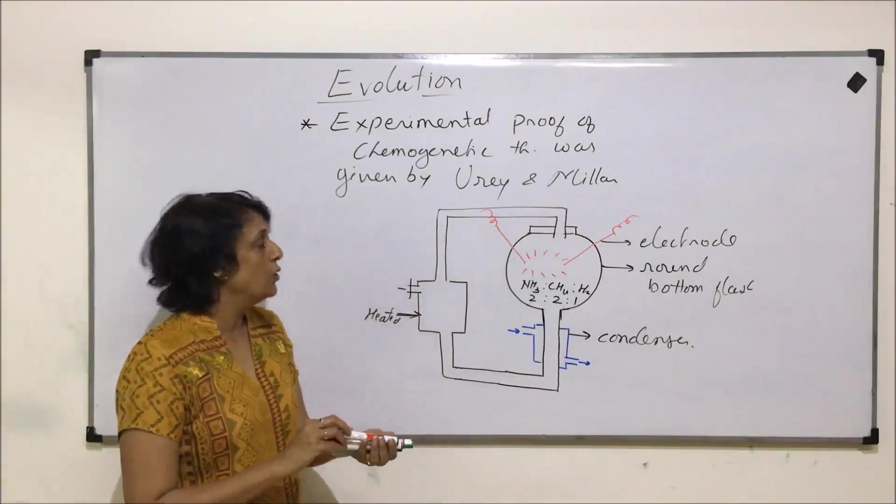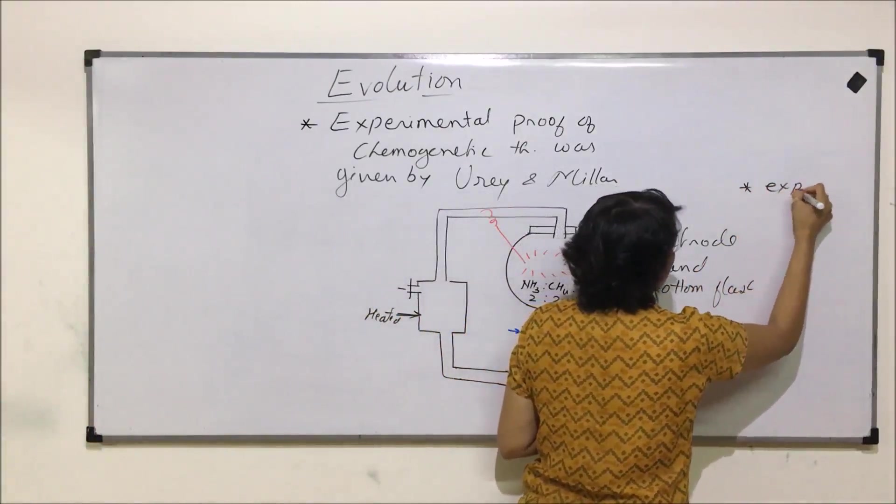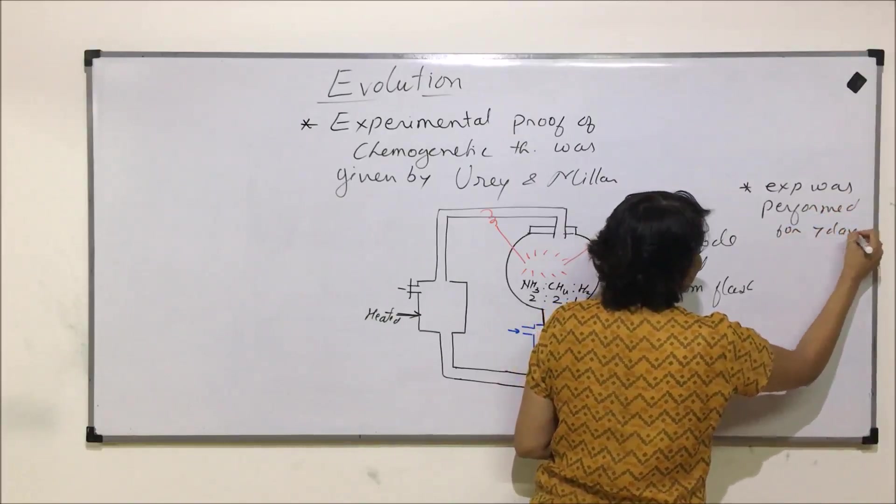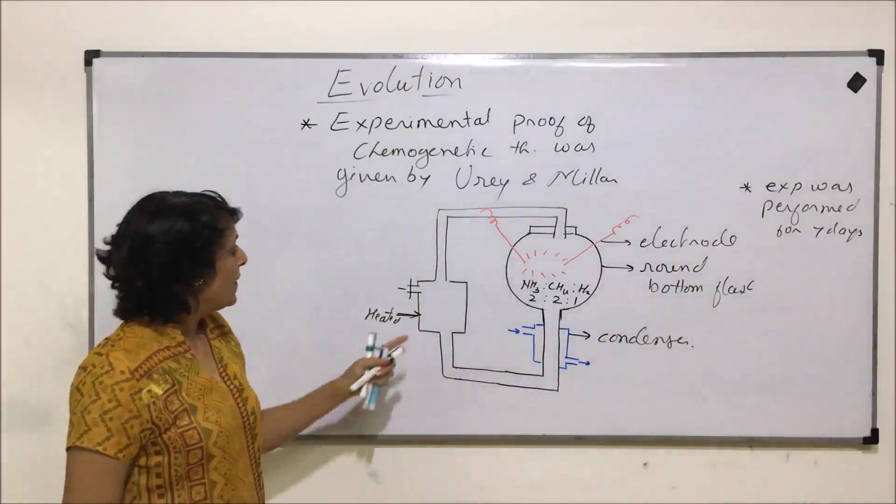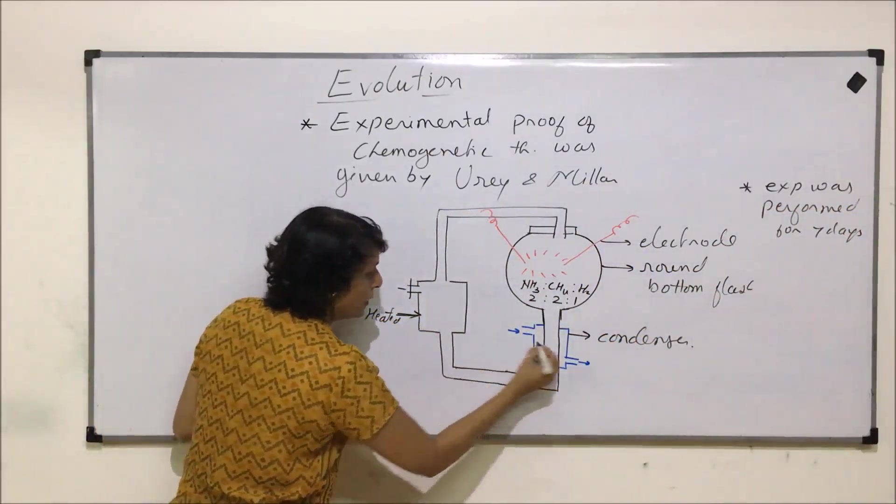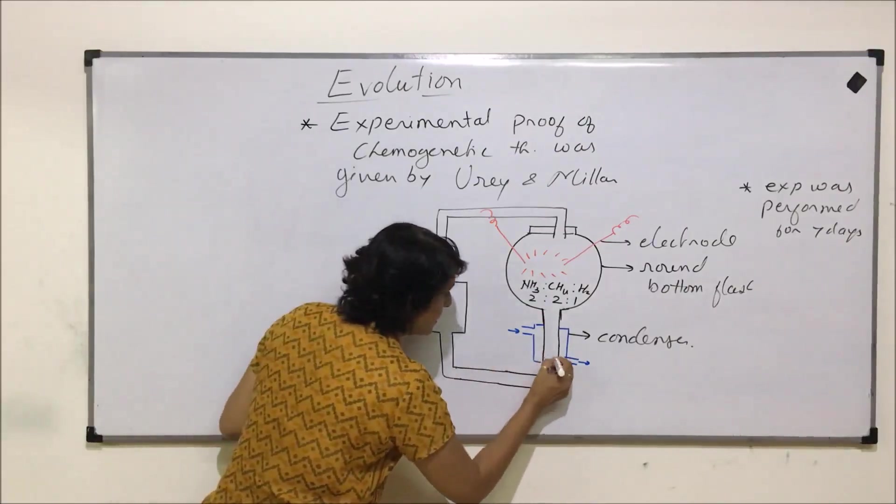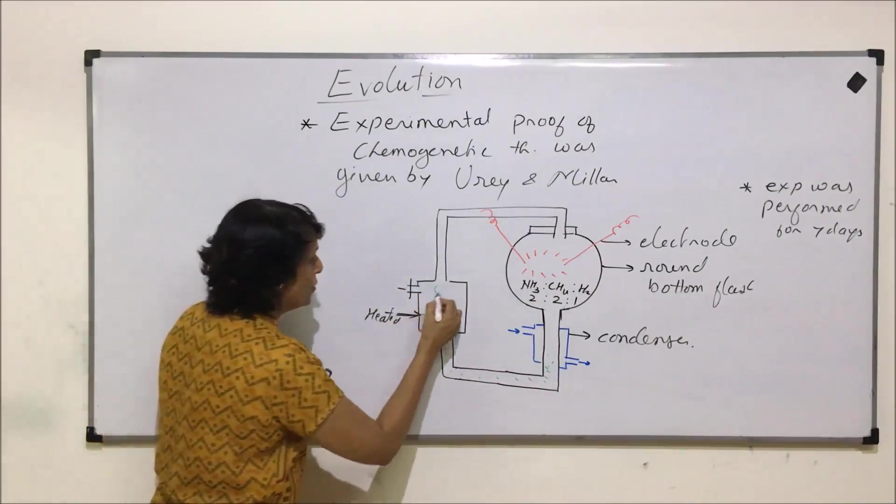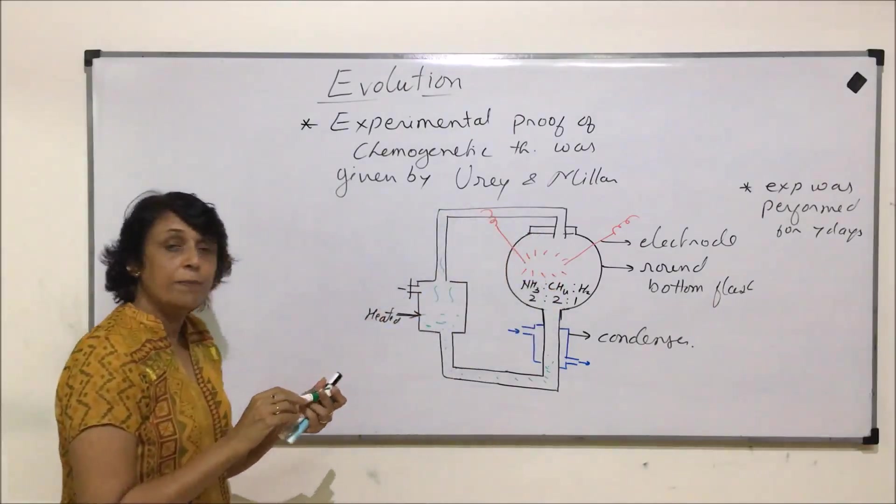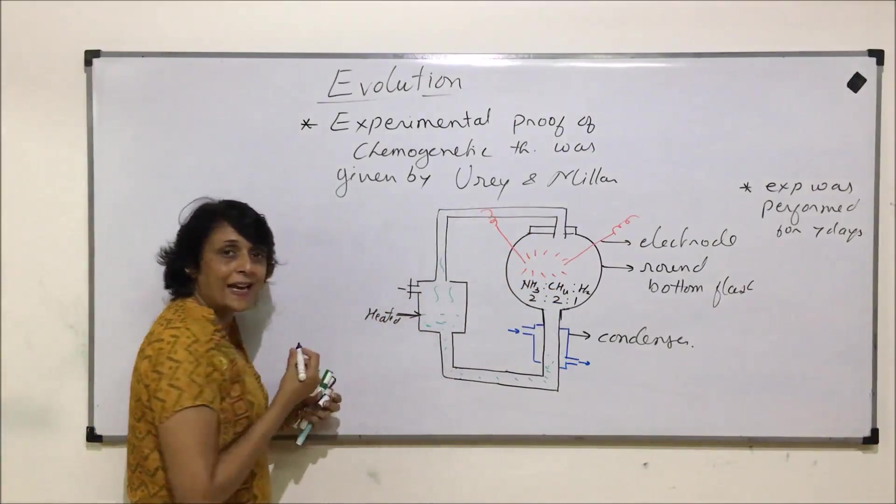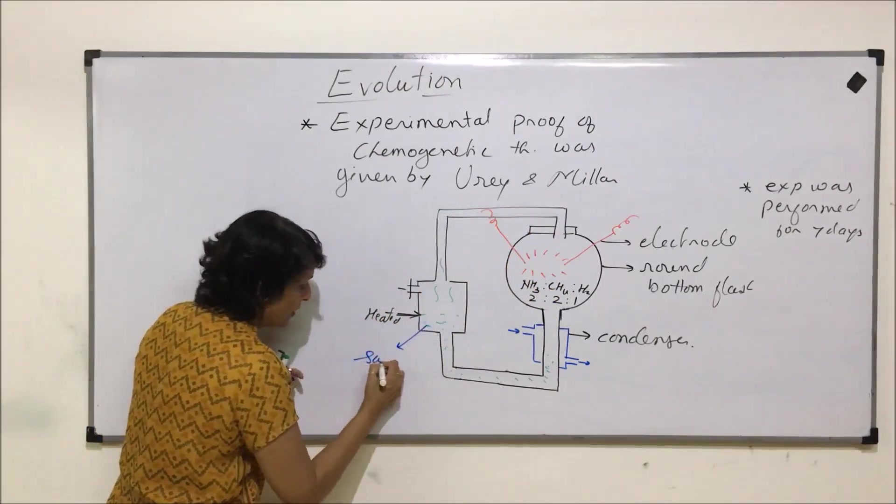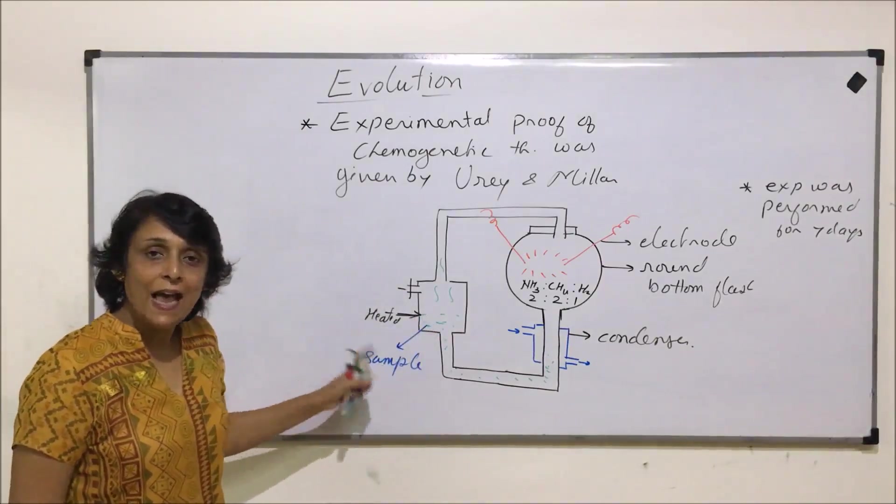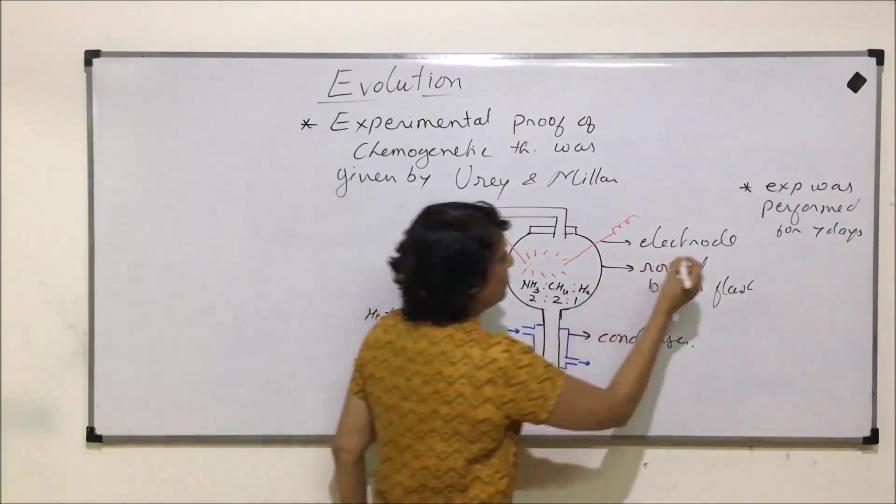They allowed this experiment to continue for seven days. The liquid which condensed here, when heated, would turn into its gaseous state again and go back into the round bottom flask. Time to time they took out the sample which was getting collected here. When they analyzed this sample...